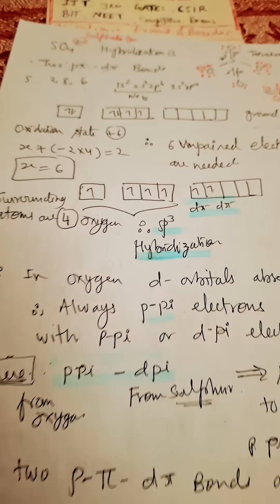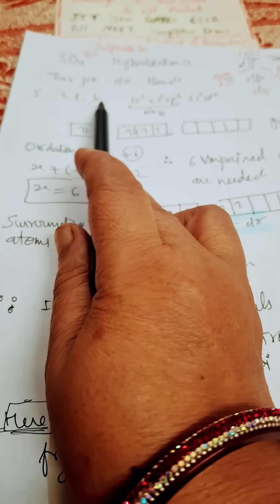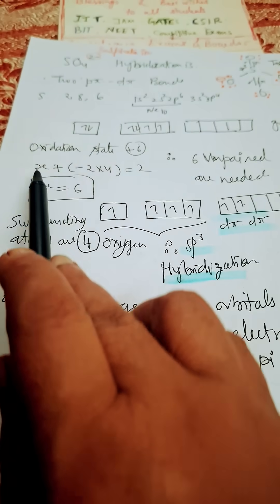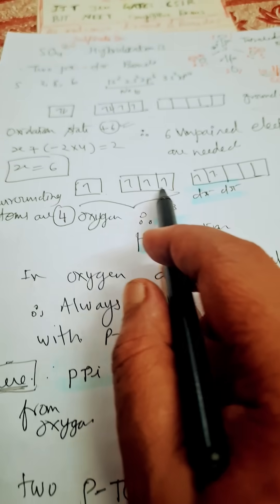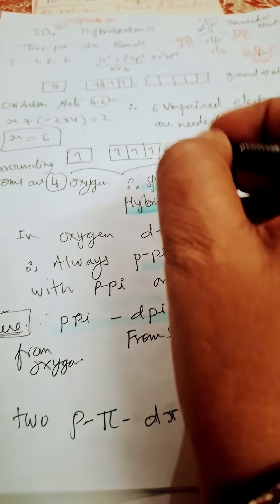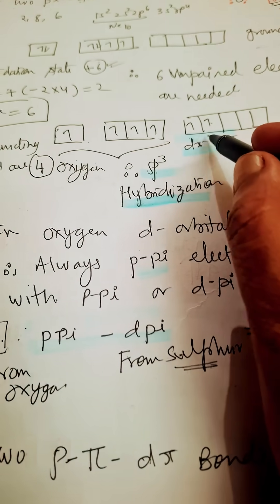Now see here: 2s2 2p6 in electronic configuration. Oxidation state of sulfur is +6, so six unpaired electrons are required. Now four surrounding atoms, so sp3 hybridization, okay?